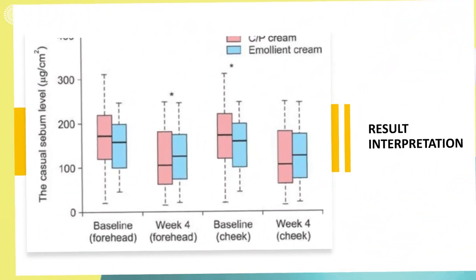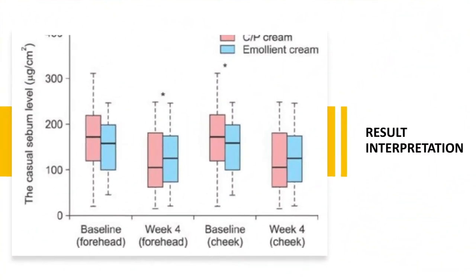A graph is provided which clearly shows the comparison between two creams — an emollient cream and another cream — shown by pink and blue colors. After every week, from different body parts like the forehead, the amount of cream applied and the reduction in sebum was calculated with the help of the Sebiometer. This is how the results of cosmetics are evaluated using the sebum meter.